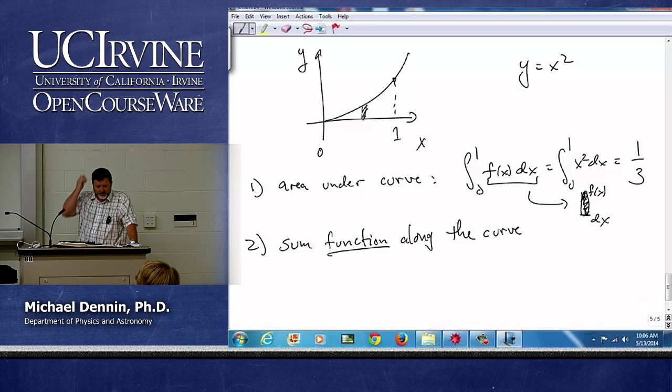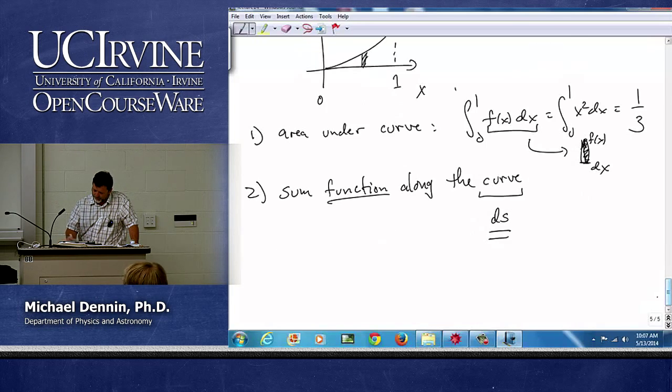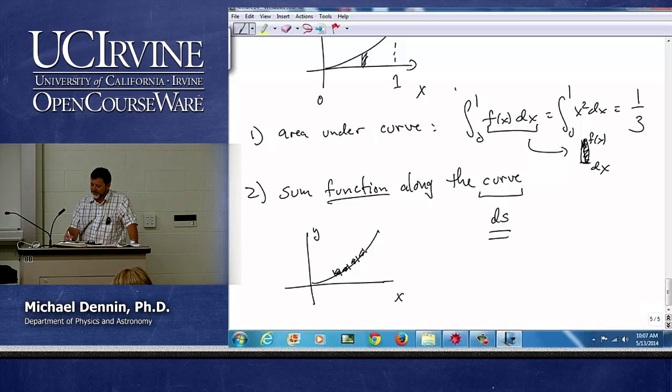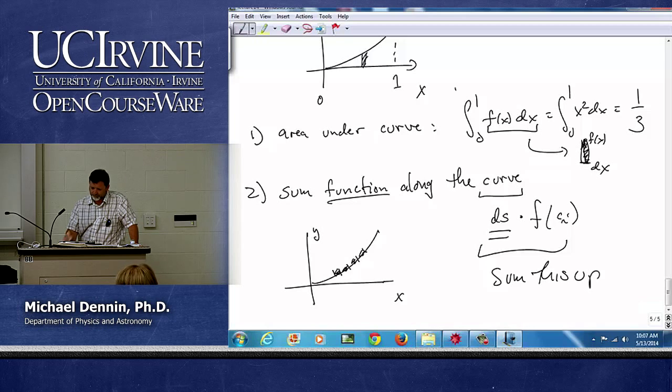Here what we're doing is basically taking little pieces of the curve, and this is the key, so they're little pieces ds. They're along the curve. We're going to now take, let's redraw our curve, we're going to take a little piece of the curve, and take that and multiply it by the function at that spot on the curve, and then sum this up. And that's a fundamentally different idea.